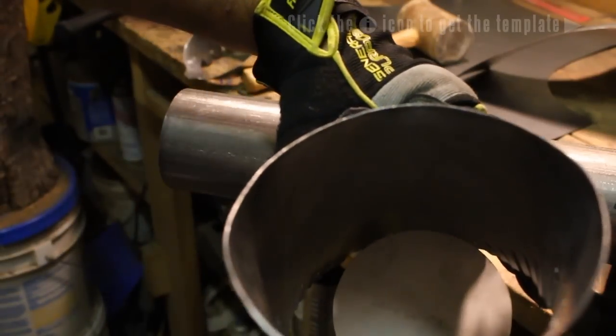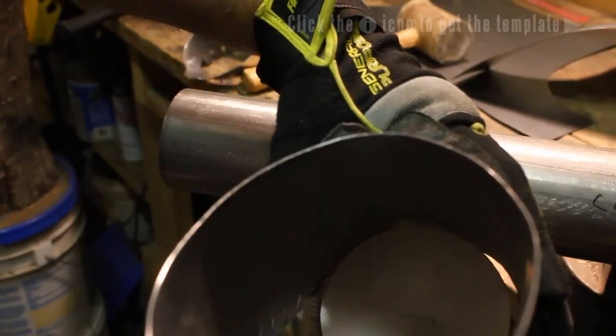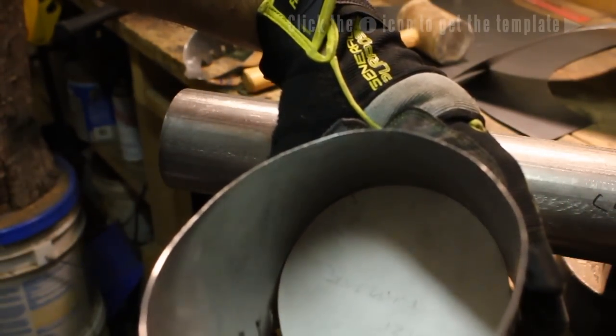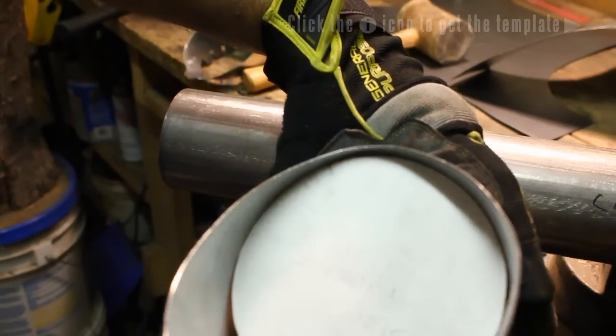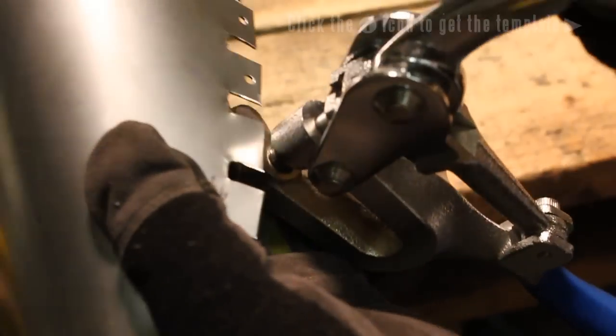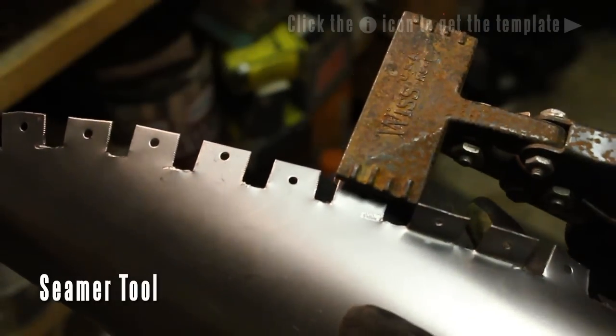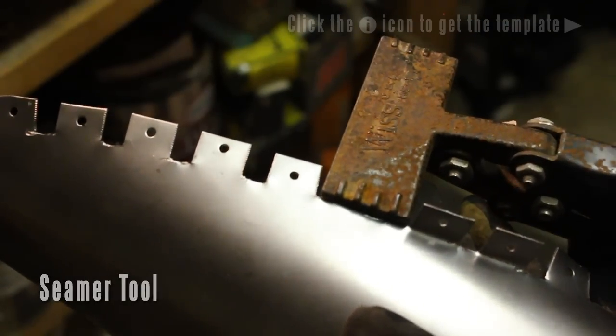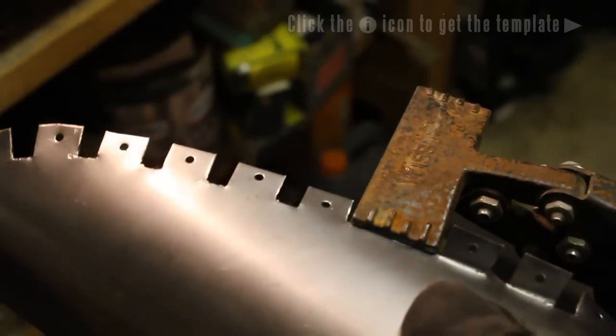Now in the template, I've included this circle, and this is just a test to make sure that you've got this thing curved to the right degree. Once you've done that, go ahead and pop your holes or drill your holes. And then using a seamer tool, go ahead and bend the tabs over.